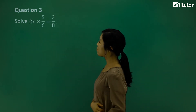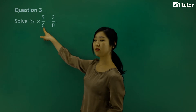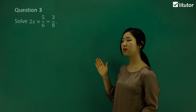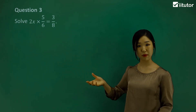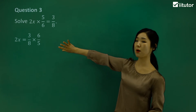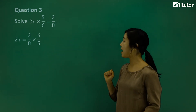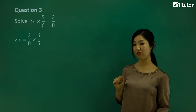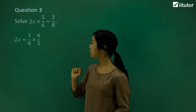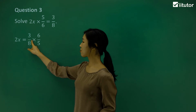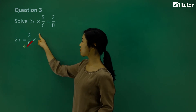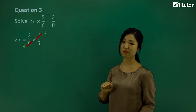Question 3 — again, we're solving for x. We're multiplying by 5 over 6, so we have to divide by 5 over 6 to move it to the other side. When dividing by a fraction, change it to a multiply and flip it — reciprocate it. So I'm multiplying by 6 over 5; the 5 over 6 becomes flipped to 6 over 5. Can we simplify before multiplying? The 6 and the 8 have common factors of 2. Cross out the 8 — 8 divided by 2 is 4, replace with 4. Cross out the 6 — 6 divided by 2 is 3, replace with 3.